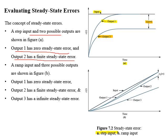For ramp input, we have three possible outputs shown in figure B. If output is following the input, we will have zero steady-state error — output one follows the input. If we look at output two, there is a constant difference between input and output two, so we will have a finite steady-state error. In the case of output three, there is a difference of slope and the difference is constantly increasing with time, so we will have an infinite steady-state error as time approaches infinity.